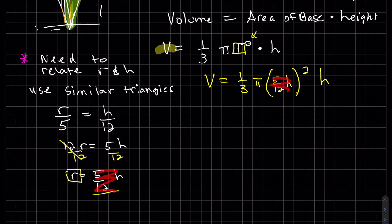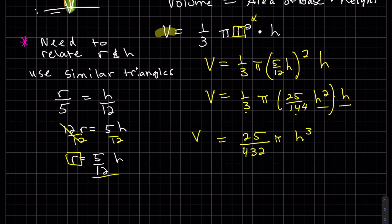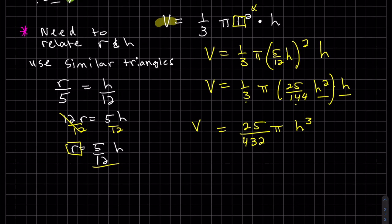Simplify before taking the derivative to avoid the product rule. Combining the h terms gives V = (25π/144)·(1/3)·h³. Bring the constants to the front and simplify: V = 25π/(432)·h³.